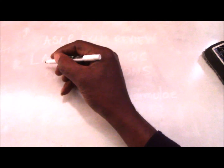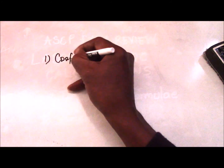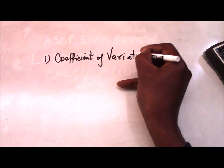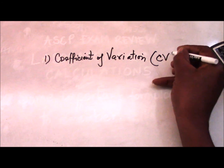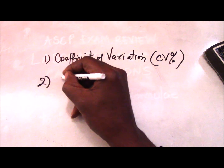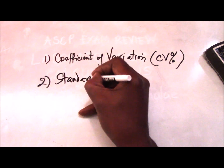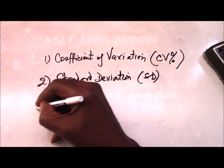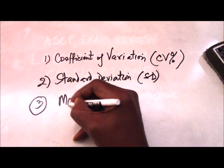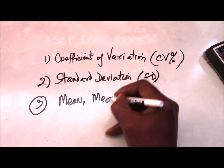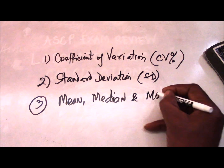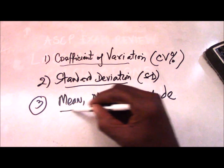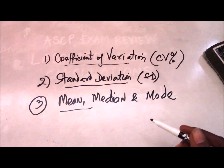I'd like you to remember the following ones. First is the coefficient of variation, often abbreviated as CV, expressed as a percentage. Second is the standard deviation, abbreviated as SD. And the third is a collection of the mean, the median, and the mode. Of this collection — CV, standard deviation, and mean — these are mostly reflected in today's modern analyzers.